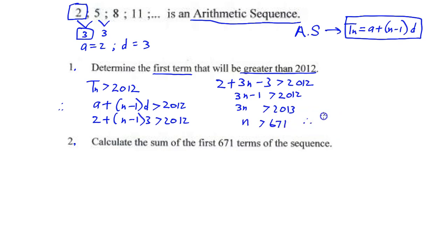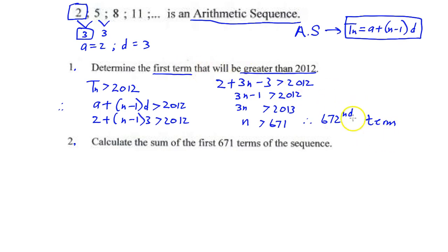Dividing both sides by 3: n > 671. Therefore we can conclude it is the 672nd term. The first term that will be greater than 2012 is the 672nd term.